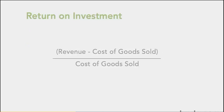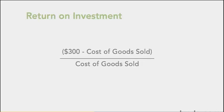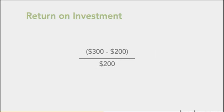Return on investment. Here is the formula: Revenue minus cost of goods, over cost of goods. For example, we take the revenue of $300, and the cost of goods is $200, plus an additional cost of goods of $50.